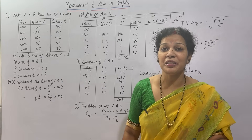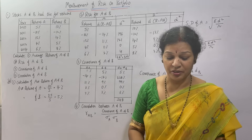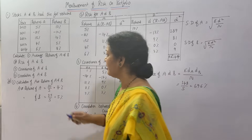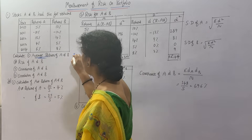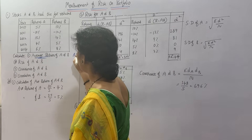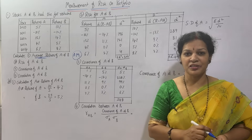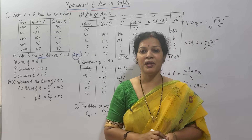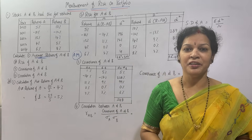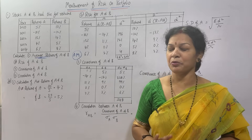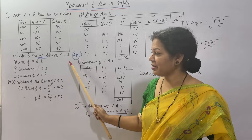Average returns means nothing but arithmetic mean. The formula for arithmetic mean in an individual series is Sigma X by N. That same formula we are going to use to calculate average returns.